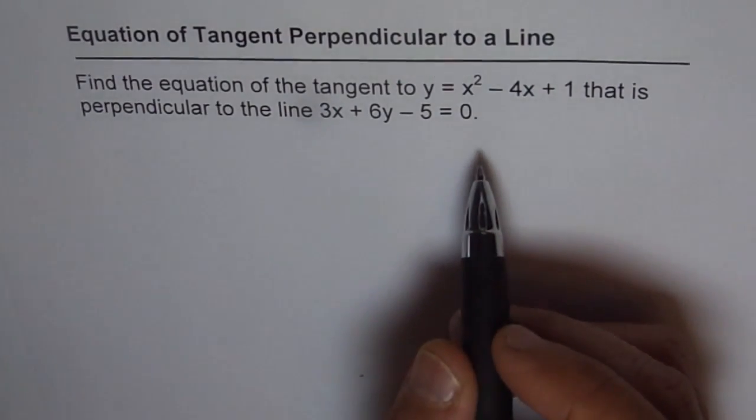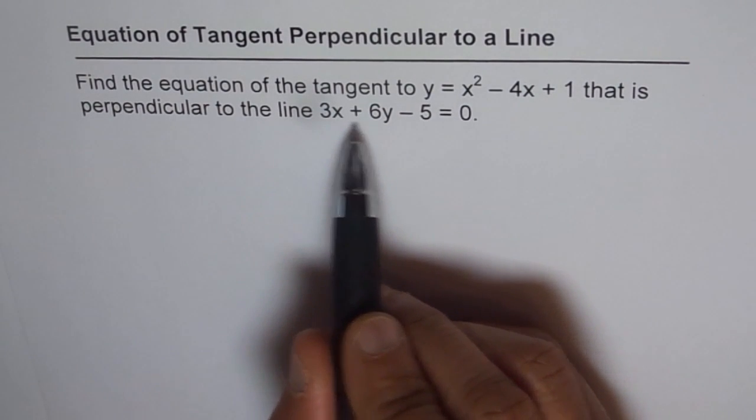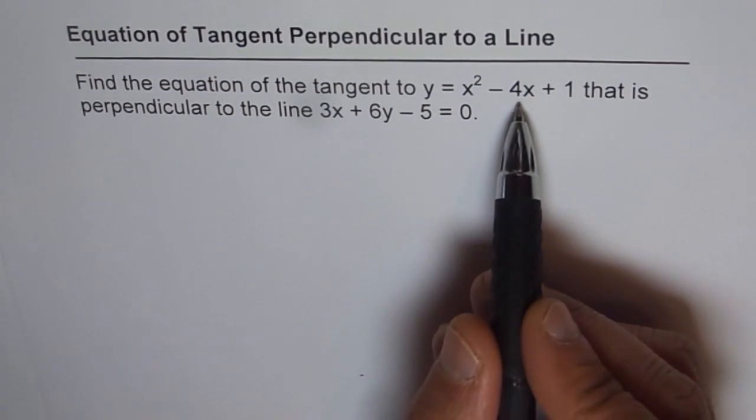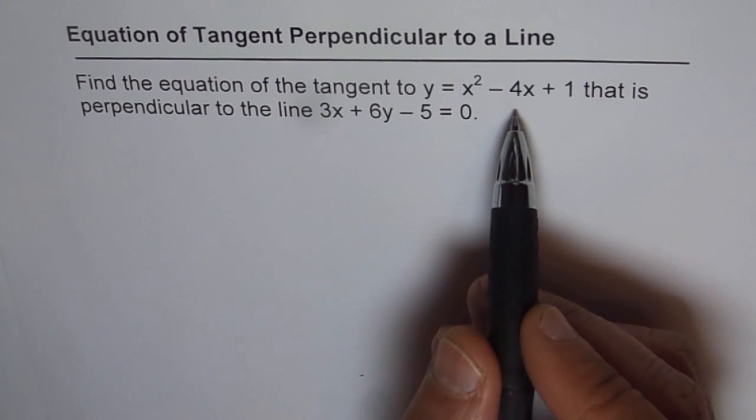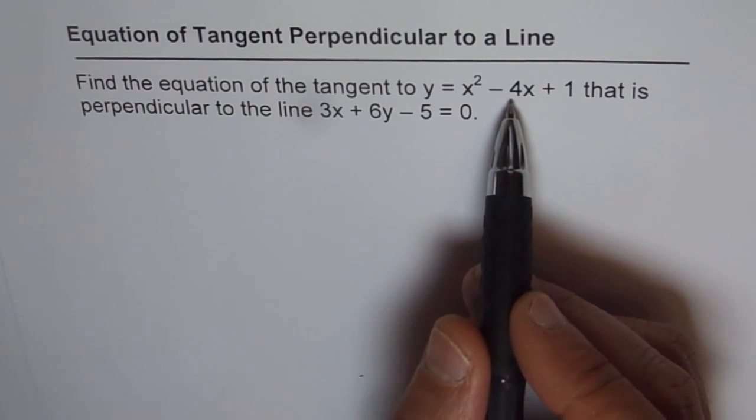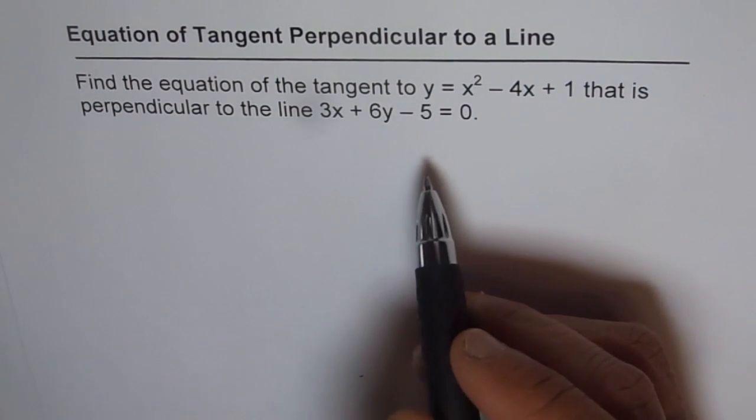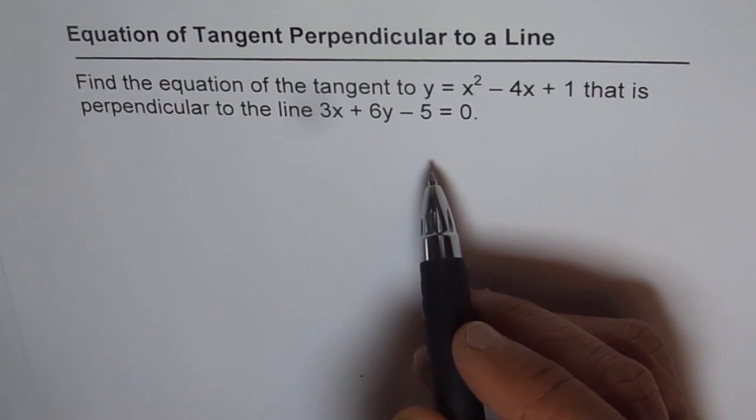Now in these kinds of questions, we know actually the slope, since we know it is perpendicular to the given line, but we don't know the point on the curve. So what we need to do is find the point on the curve where the tangent should be drawn so that we get the required slope. And then once we have the point and the slope, we can find the equation of the tangent.